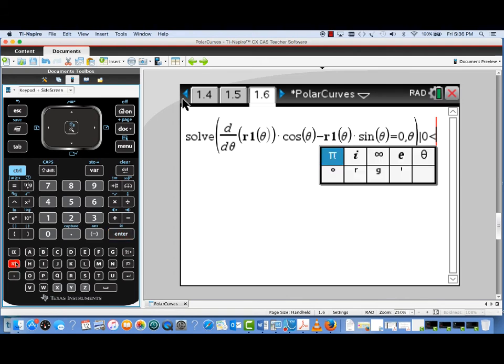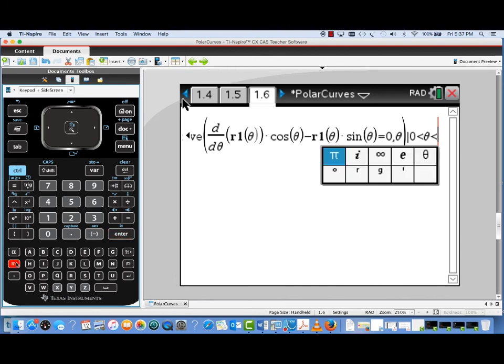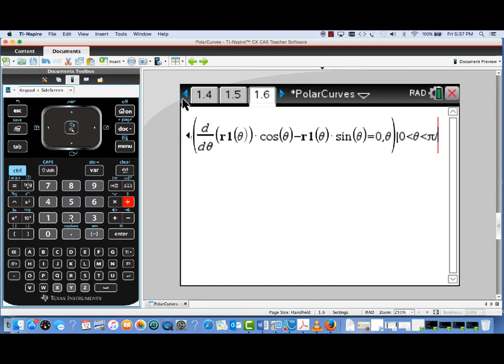That's 0 less than theta, less than pi over 2. Notice I'm just entering that like I would a compound inequality, just writing it down. And so we're going to solve for dx d theta equal to 0 in the range for our polar curve.